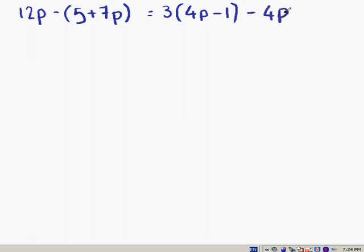This is Solving Equations Part 2, example number 4. The equation is 12p minus brackets 5 plus 7p equals 3 brackets 4p minus 1 close brackets minus 4p. Just like before, we're going to remove the brackets and then solve for p.